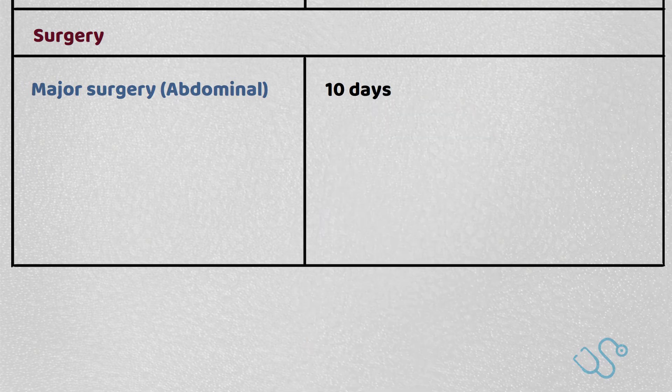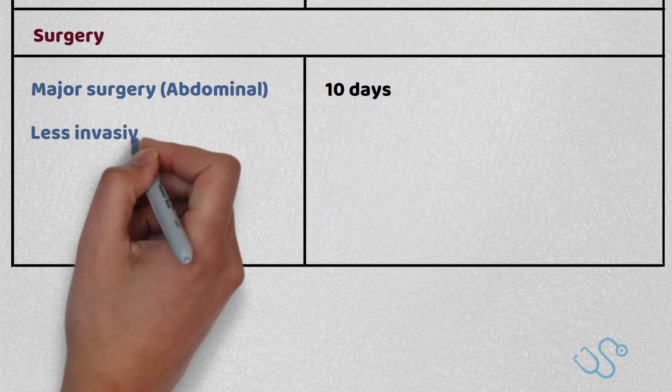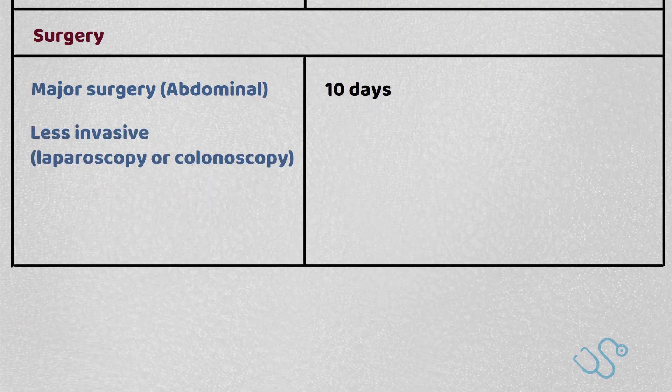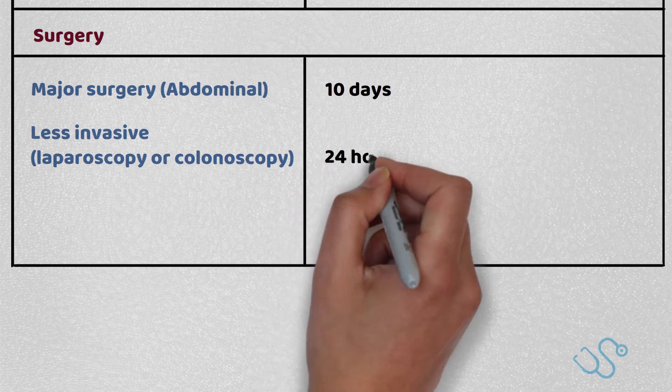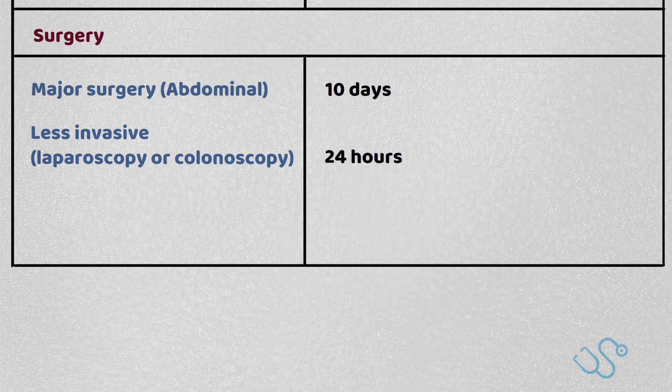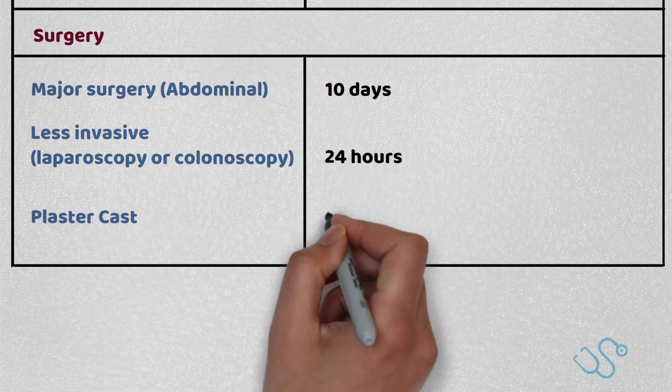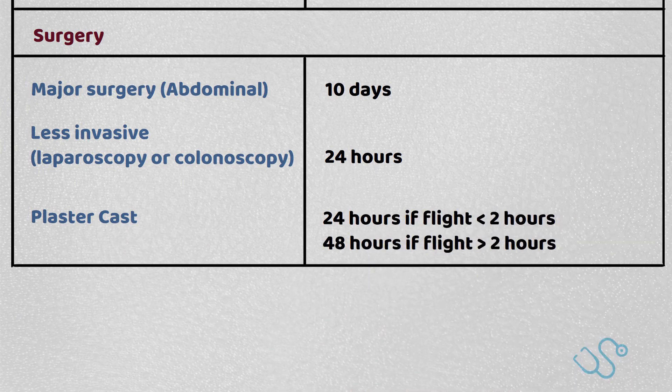What about surgery? Major surgeries, such as large abdominal surgeries, you'd need 10 days before you can fly. But less invasive surgeries, such as laparoscopies or colonoscopies, you'd only need to wait 24 hours. And if you've been in a plaster cast, you'd need to wait 24 hours if the flight is less than 2 hours, or 48 hours if the flight is more than 2 hours.